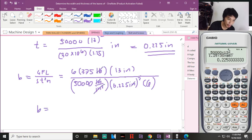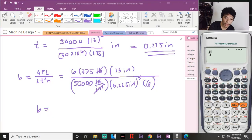So b will be - cancel the same units, pound, pound, inch squared, inch squared - inch remains. So this will be 6 times 375 times 13 divided by 50,000 times 0.225 squared times 6. So that is 1.959 inch, close to 2.